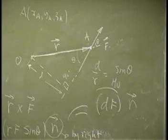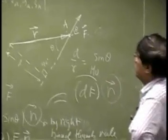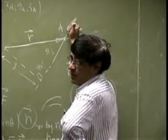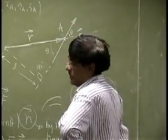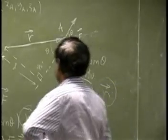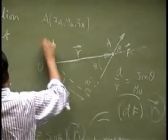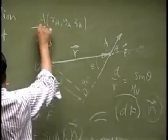So this vector here will be same, R cross F, and that thumb is going to point towards the direction. So somewhere here you're going to have the MO vector.